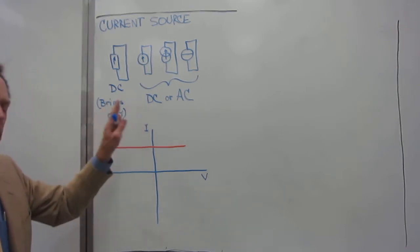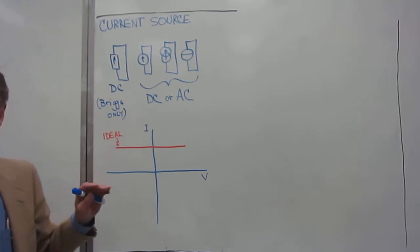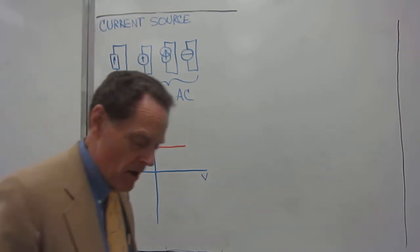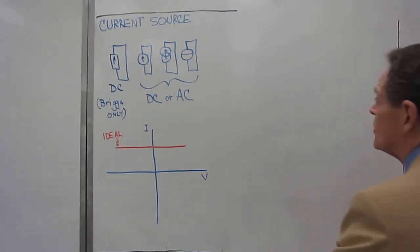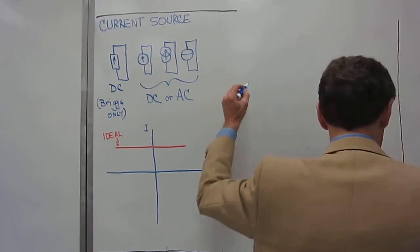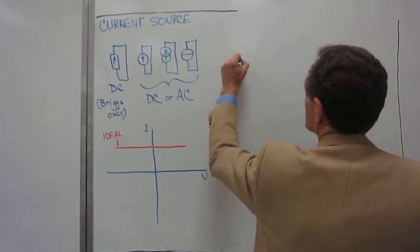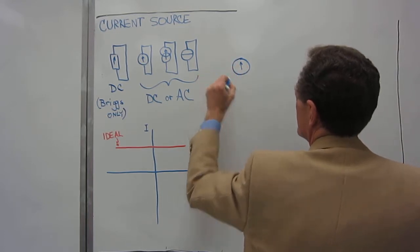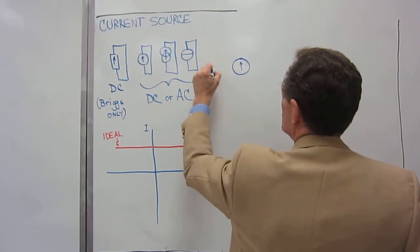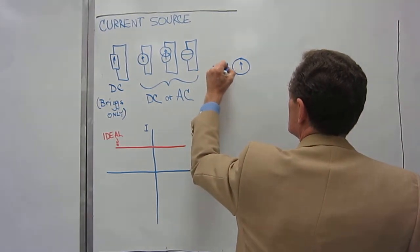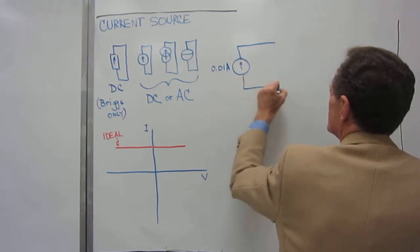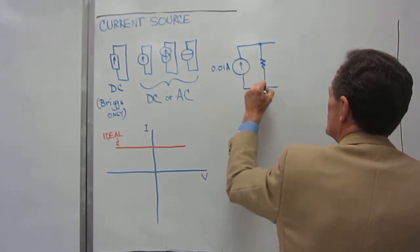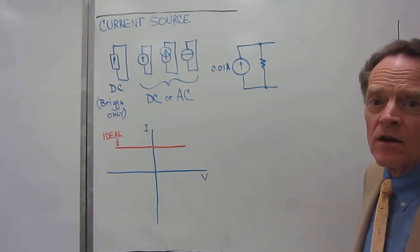This is ideal, but what does a non-ideal current source look like? Well, I'll go draw a circuit that shows basically a non-ideal current source, and it would look something like this. So, let's say that this is a 10 milliamp current source, so that would be 0.01 amps.